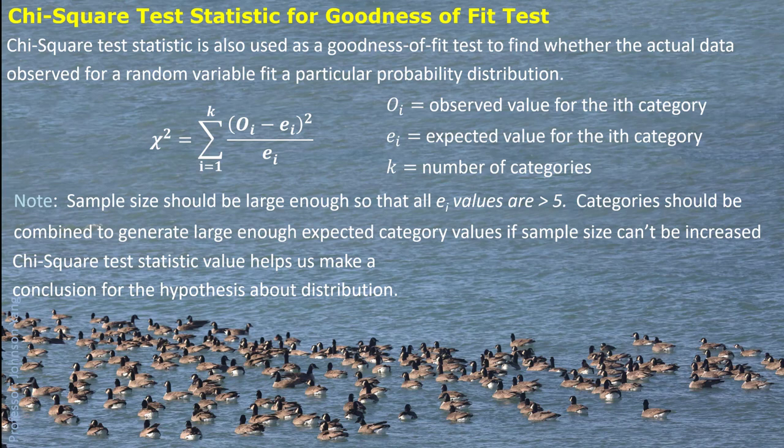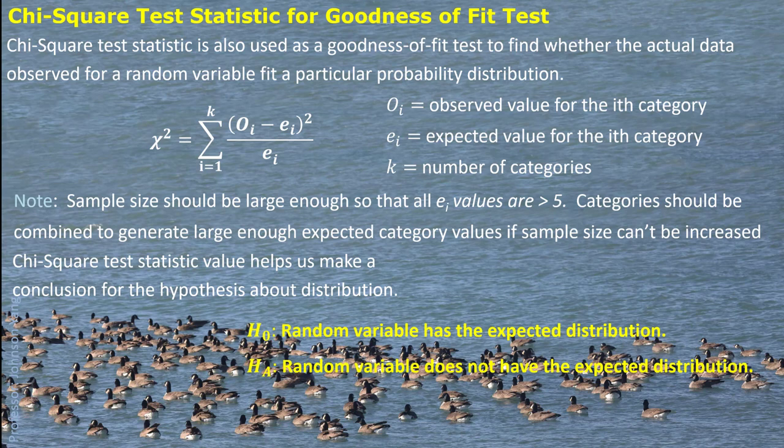By calculating the chi-square test statistic value, we can make decisions for the hypothesis about the distribution. The hypothesis model here is different from what we have seen earlier — those were all about population parameters such as population mean, population proportion, or population variance. Here it is about the whole distribution. The null hypothesis is that the random variable has the expected distribution, and the alternative hypothesis is that it does not.